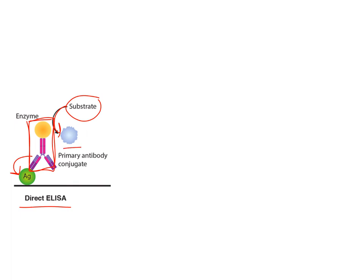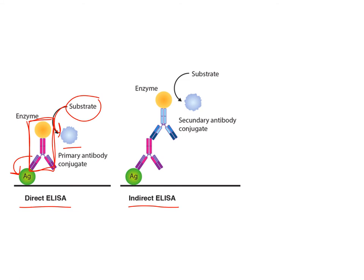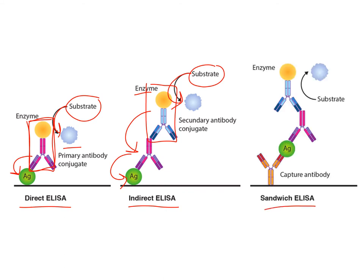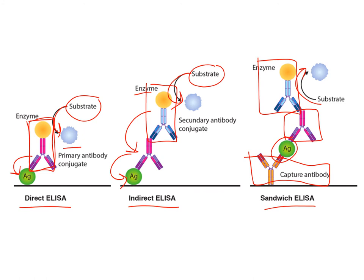In an indirect ELISA, the enzyme-linked antibody binds to an antibody which has recognized the antigen, and at the end you add a substrate; if the enzyme is present, the substrate is converted into a product. In a sandwich ELISA, you start with a capture antibody, then add the antigen, then a secondary antibody to recognize the antigen, then an enzyme-linked antibody that recognizes the second antibody. At the end you always add the substrate, and if the enzyme is present it converts it into a colored substance.